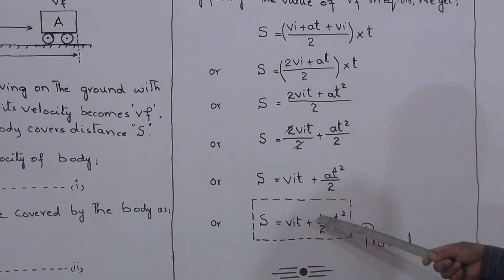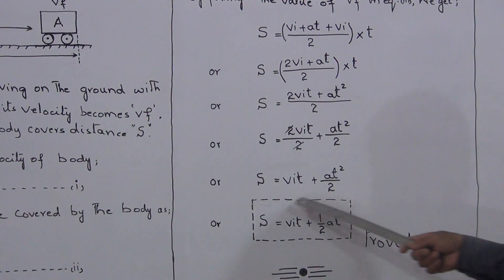The remaining is S = VIT + AT²/2. Instead of upon 2, you can write it 1 upon 2. So S = VIT + 1/2 AT². Proved.